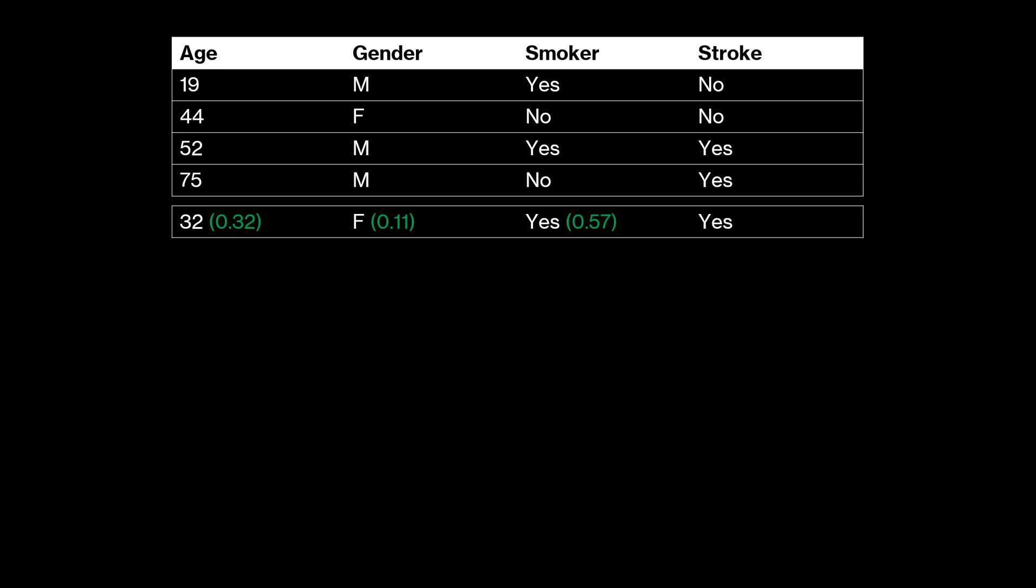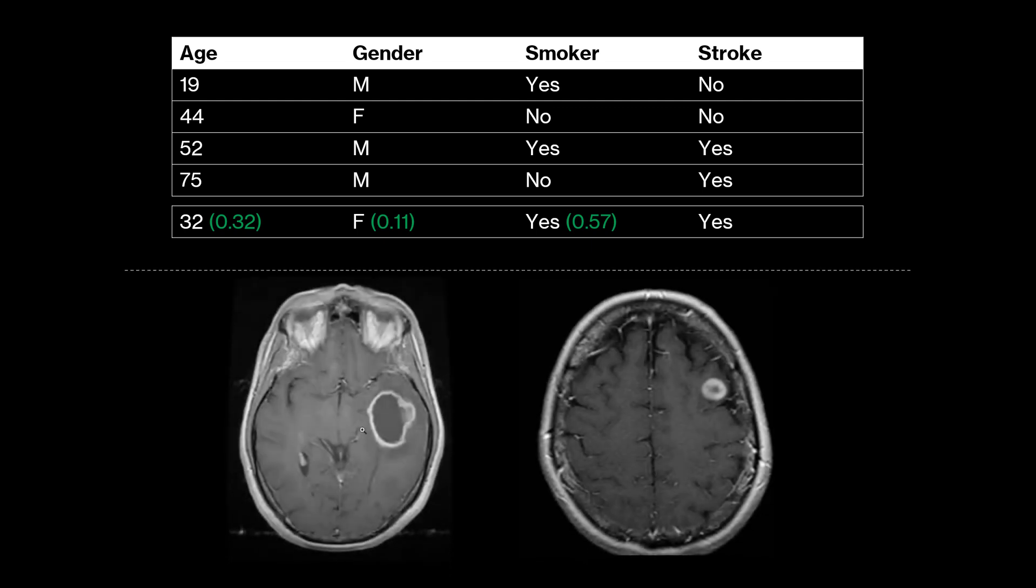For images we can simply explain which area of an image led to a certain prediction. Just like in the tabular example we look for the features with the highest impact, which are pixels for image data. For this brain MRI data set we can for example explain what made a model predict cancer. Using such approaches we can shed some light on the black box machine learning models because we understand the reasoning behind the predictions. Now what about graph data?